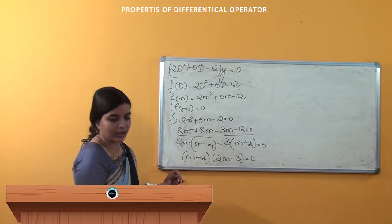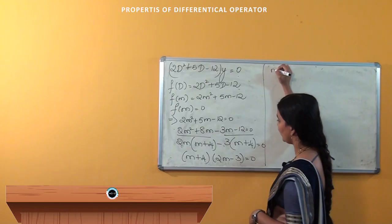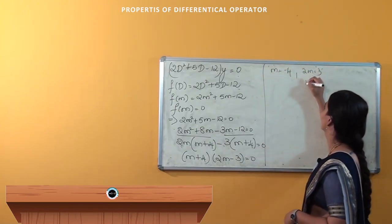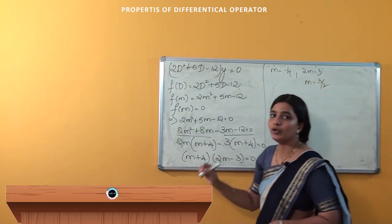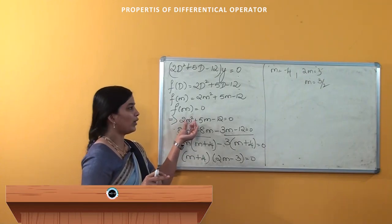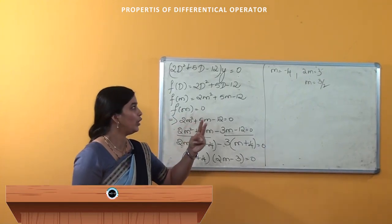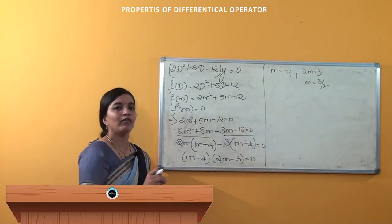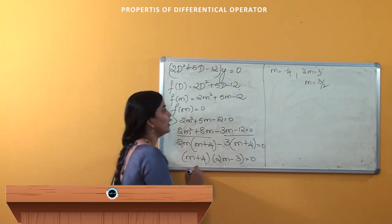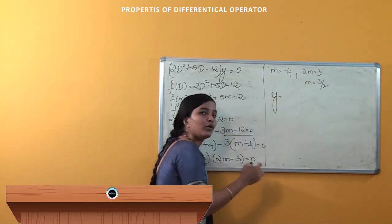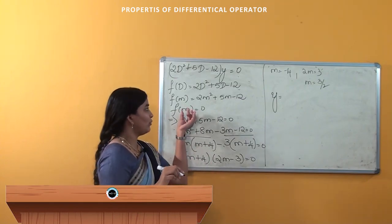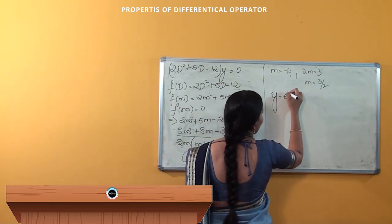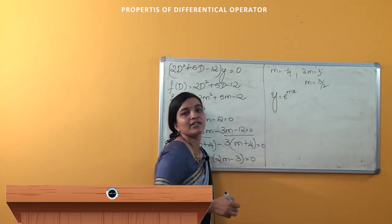On simplification, I get m = -4 and 2m = 3, that is m = 3/2. So we got 2 roots — since it is a quadratic equation, we will get 2 roots: m = -4 and m = 3/2. Using the property that if m is a root of the equation, then the solution can be written as y = e^(mx).